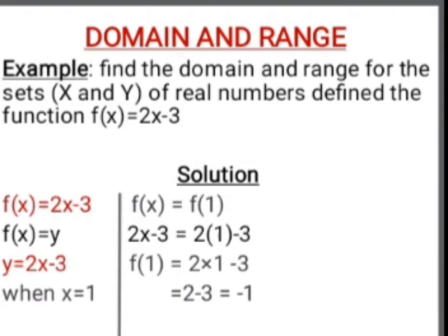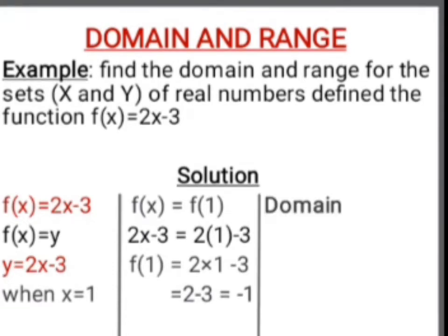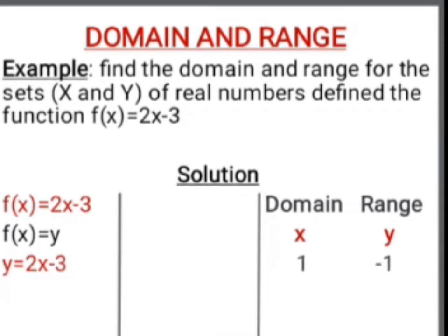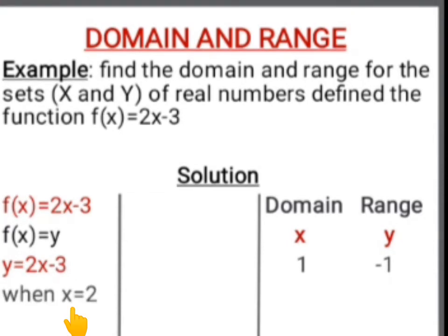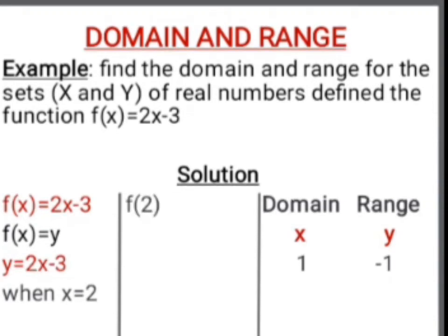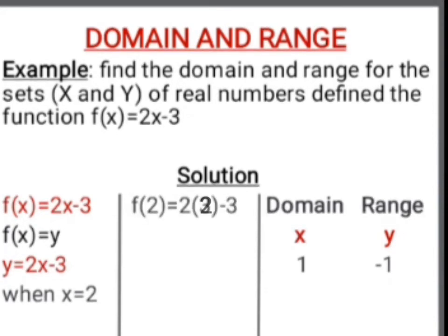Let's write the domain and range side by side: domain (x) and range (y). When x = 1, the range y = -1. Now let's put x = 2: f(2) = 2(2) - 3 = 4 - 3 = 1. So when x is 2, the range is 1.